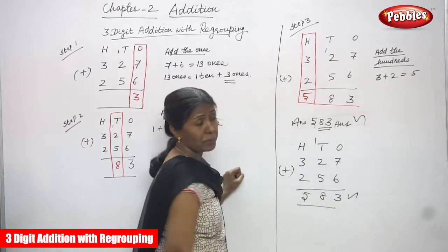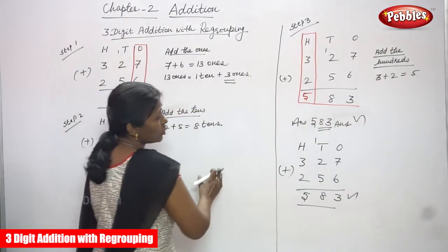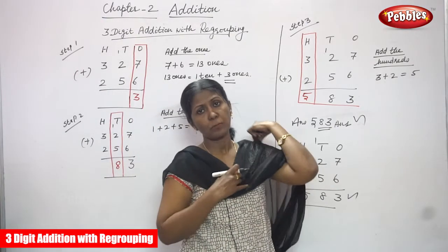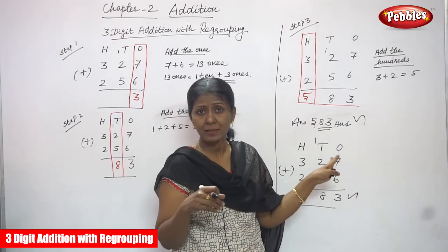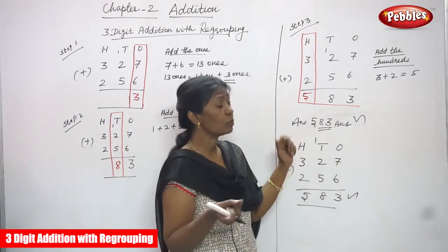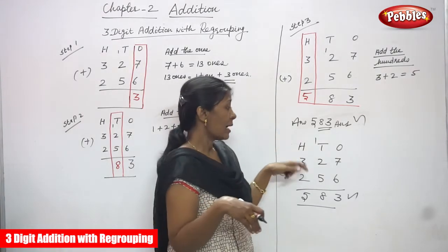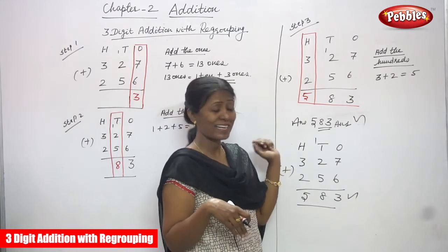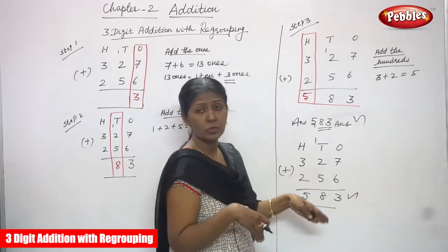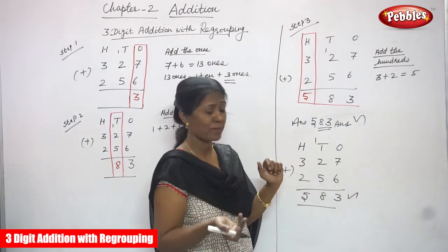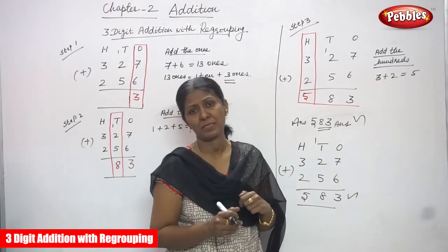So both answers give 583. The regrouping method is a longer process — you write each step separately — but at an early age you can do it without any mistakes and confidently get the marks. The normal addition is a traditional method. Both have been taught here, so you can choose whichever method you prefer. The answer is 583 in both methods.